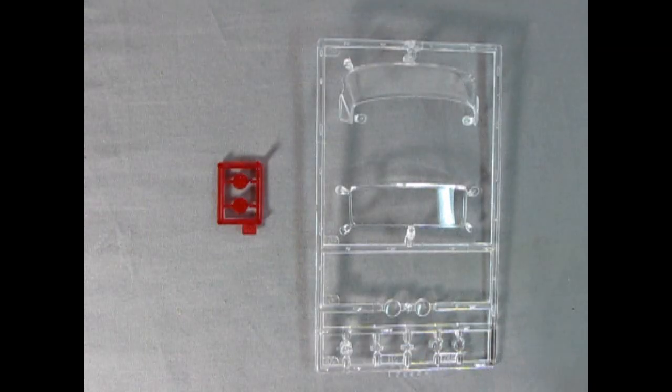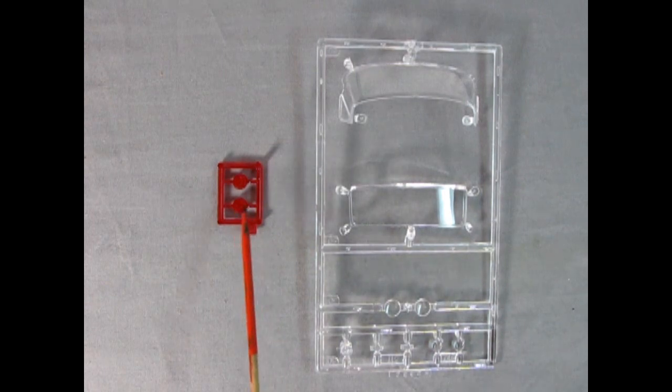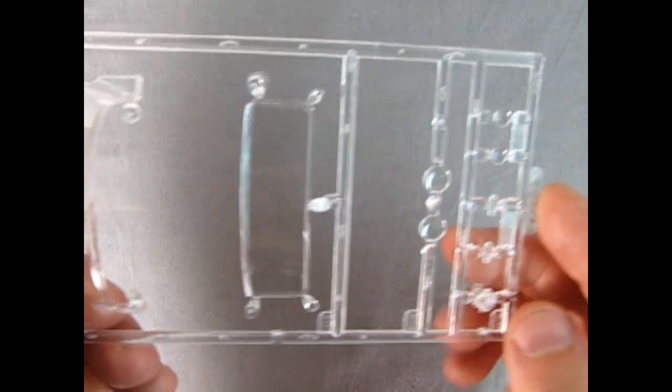Next up we've got our front glass which includes our windshield and our side vent windows, the rear window itself, the headlights and all the little turn signal and parking lamps. And then we've also got our rear taillights. So bringing these up into the camera again the detail is wonderful.